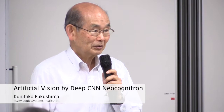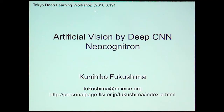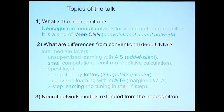Good morning. I'm glad to have a chance to talk with you here. My talk is on artificial vision by deep CNN Neocognitron. The topic of the talk is: what is the Neocognitron? It's a kind of deep CNN convolutional neural network, but there are several differences between the Neocognitron and the conventional deep CNN. The next topic is what those differences are, and last, the neural network models extended from the Neocognitron.